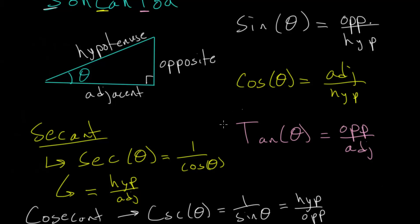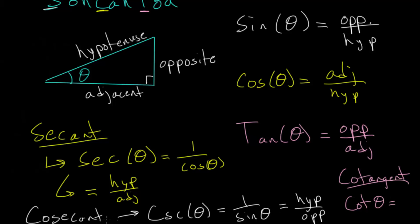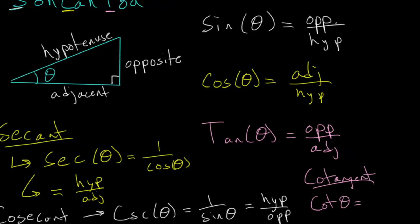Lastly, we have the cotangent function. The cotangent is one divided by the tangent, written as COT of theta. Since tangent is opposite over adjacent, we just flip this for the cotangent — so that will be the adjacent side divided by the opposite side.